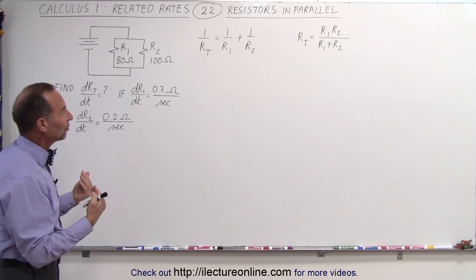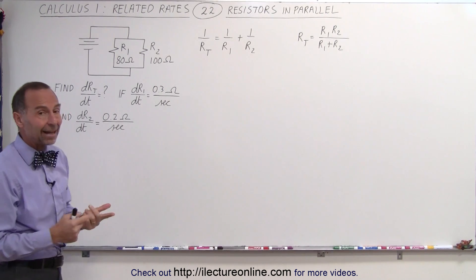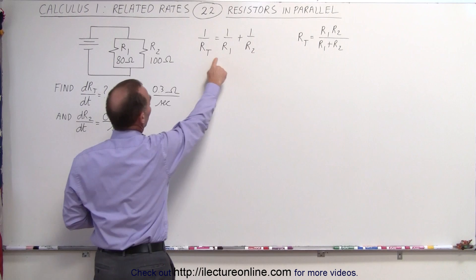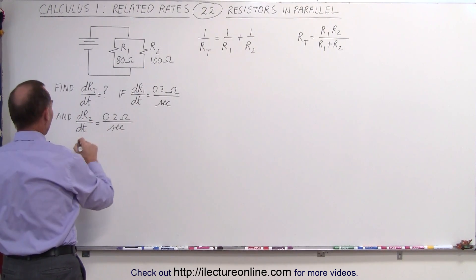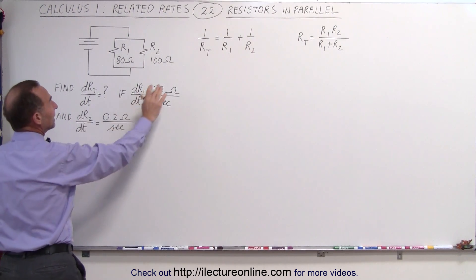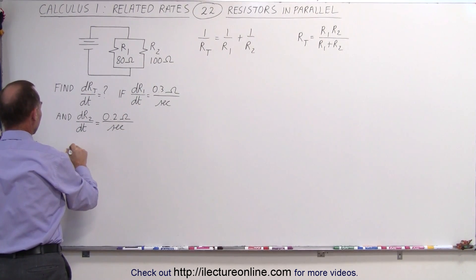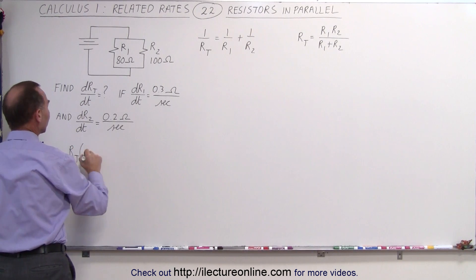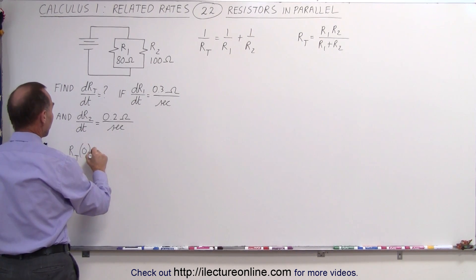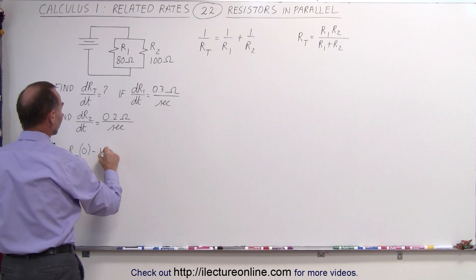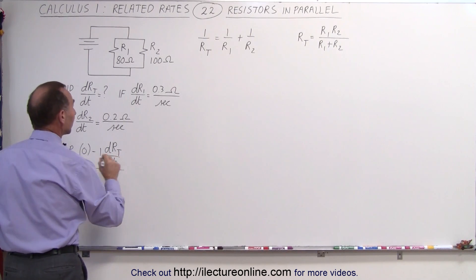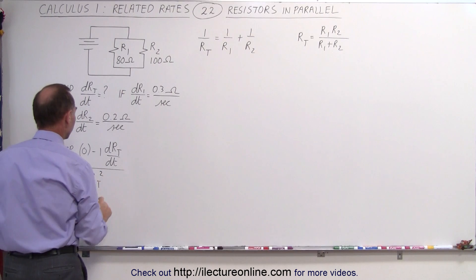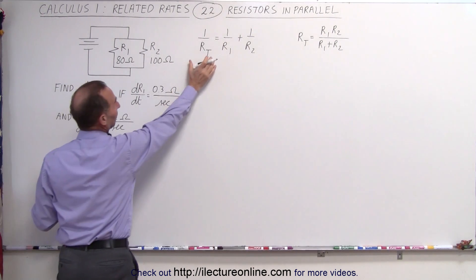Starting with the first equation, we take the derivative of each side with respect to time. These are all quotients, so on the left side, the d/dt of 1 over R_total is: the denominator R_total times the derivative of the numerator — which is 0 — minus the numerator times the derivative of the denominator, which is dR_total/dt, all divided by R_total squared.